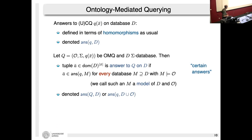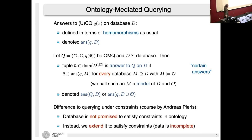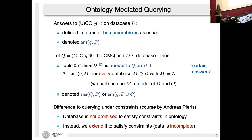Note the difference from querying under constraints: there, the data was promised to satisfy the logical theory. Here, we assume the data is incomplete and the logical theory extends the data — we use models that start with the data and add something on top to satisfy the ontology.